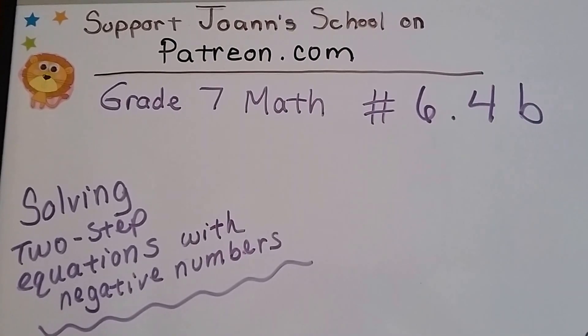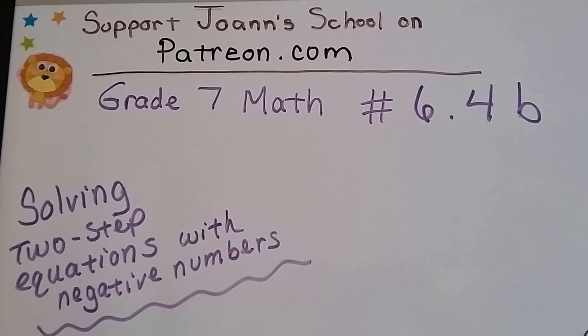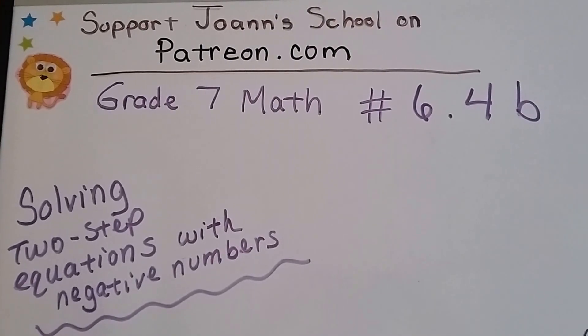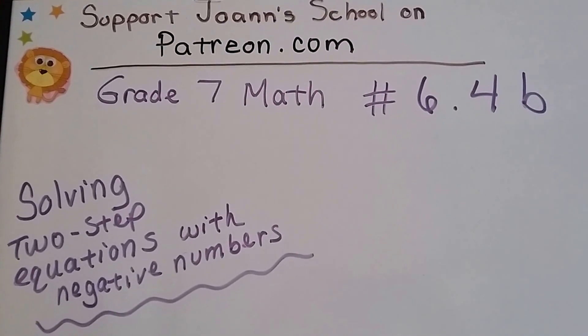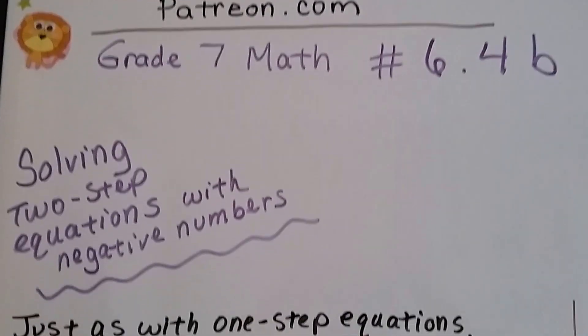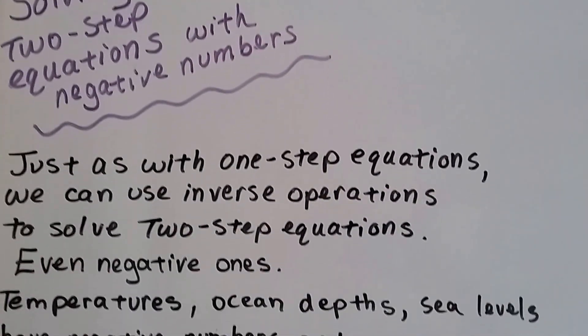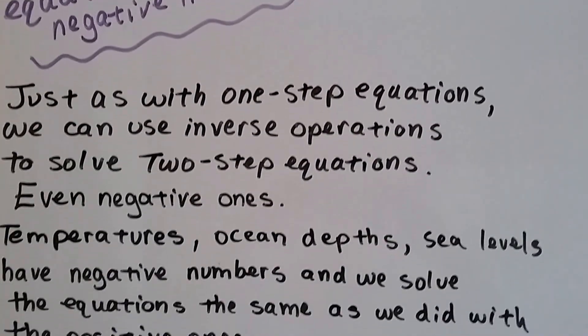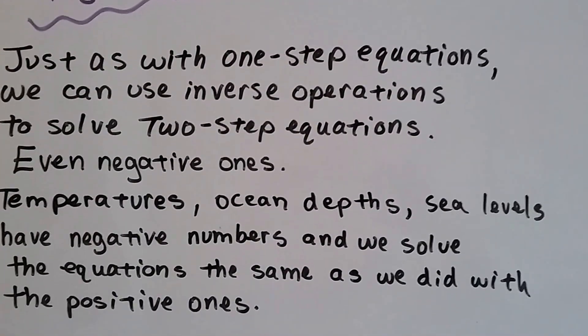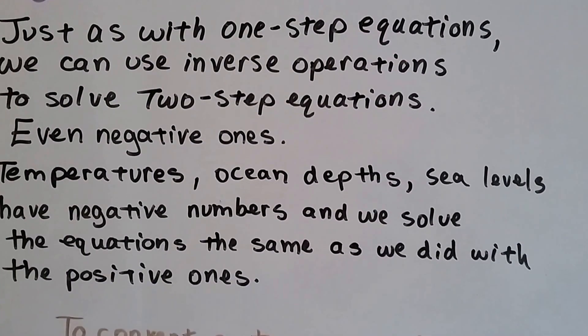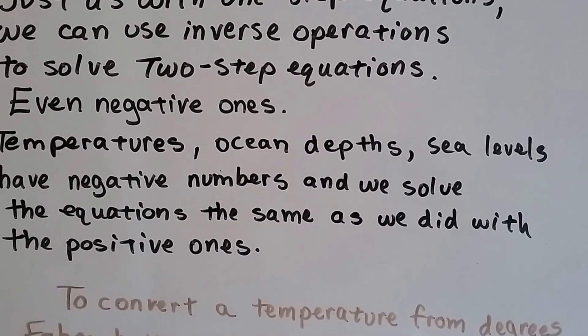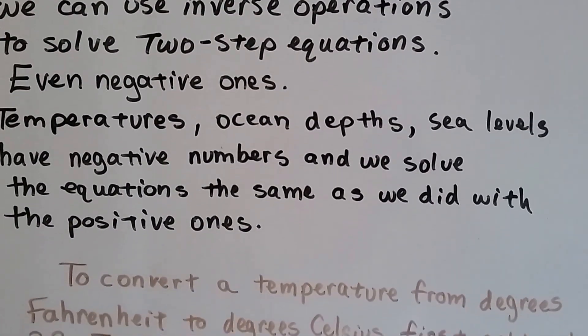Grade 7 math, number 6.4b: Solving Two-Step Equations with Negative Numbers. Just as with one-step equations, we can use inverse operations to solve two-step equations, even negative ones.